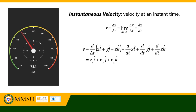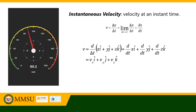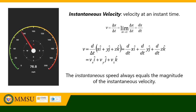Instantaneous velocity can be computed by taking its components: the derivative of x with respect to time (i-hat), plus the derivative of y with respect to time (j-hat), plus the derivative of z with respect to time (k-hat). This allows us to determine the instantaneous velocity along the x, y, and z components. The instantaneous speed is always equal to the magnitude of the instantaneous velocity, unlike average values where average velocity does not necessarily equal average speed.